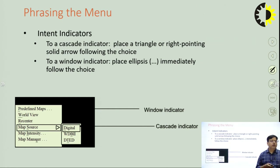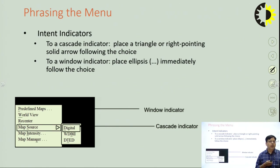The next phrasing consideration is the intent indicator. For cascading menus, an indicator should be used — for example, a triangle is used to show a cascading menu. When you click on that arrow, the particular sub-menu opens. For Windows indicators, ellipse symbols or parentheses are used, and for cascade indicators, an arrow symbol is used.